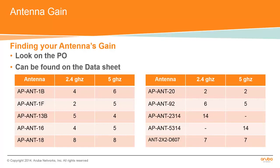Before you configure the antenna, you'll need to find the gain for your antenna model for both the 2.4 and/or the 5 GHz radio, as these numbers will be different. You can find this on the PO or by looking up the spec sheet on the antenna manufacturer's site. Here is a list of some of the Aruba antennas and the gain numbers you will need.